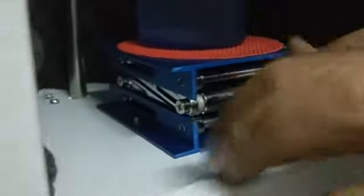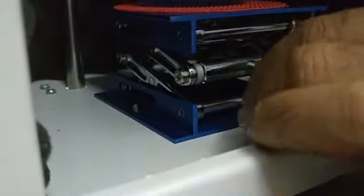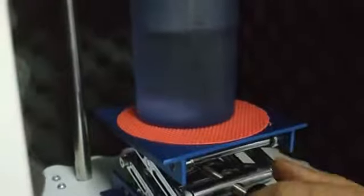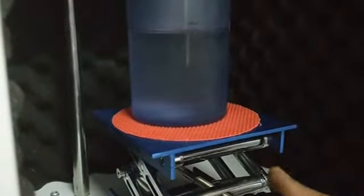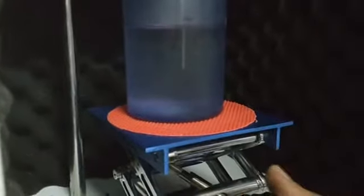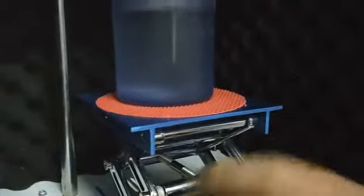In that case, we will simply put our sample, say this type of beaker or glass, and we can adjust the height of the platform with this nut. Make sure that in any case, the tip of the probe should be inside the solvent at least 1.5 to 2 centimeters. It may be more, but at least it should be 1.5 to 2 centimeters.